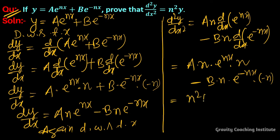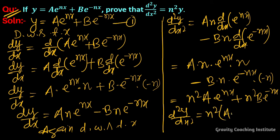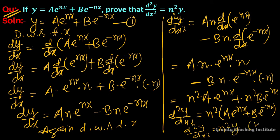So d²y/dx² equals n²a·e to the power nx plus n²b·e to the power minus nx. Suppose this equation is (1). Now we take n² as common, so n² into (a·e to the power nx plus b·e to the power minus nx). Therefore d²y/dx² equals n²y, by equation (1). Hence proved.